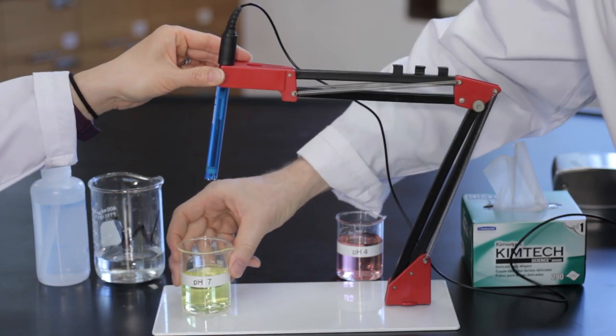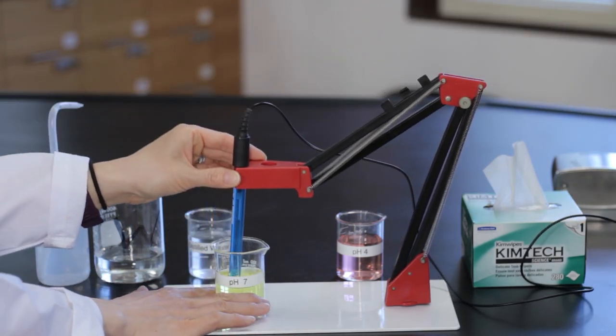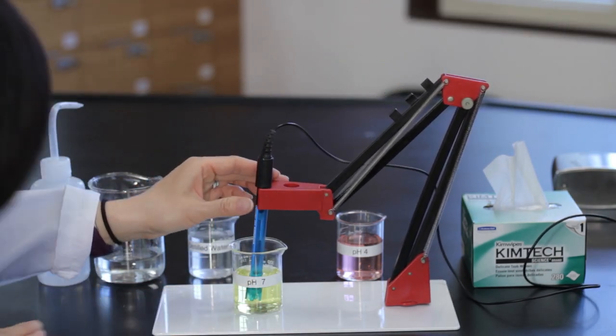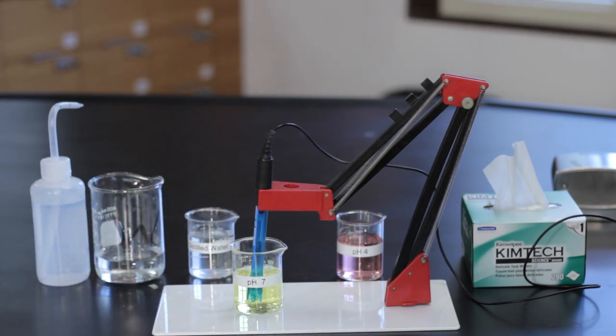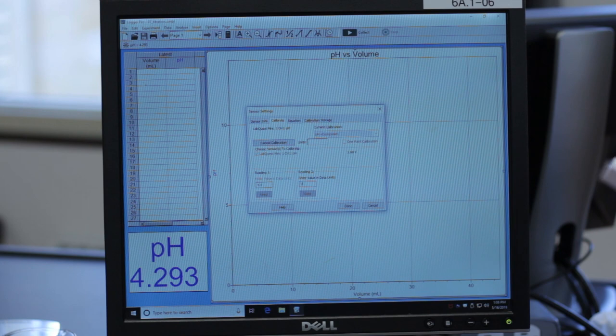Carefully insert the pH sensor into the pH 7 buffer solution. Set reading 2 to 7.0, click on keep, then click on done.